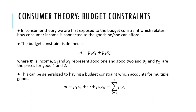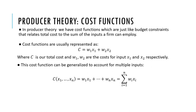This could be generalized to a budget constraint which accounts for multiple goods: M equals the summation of Pi·Xi where i goes from one to n. On the flip side, in producer theory we have cost functions, which are just like budget constraints.